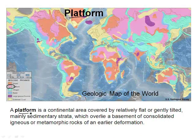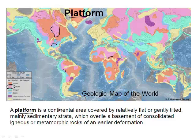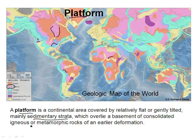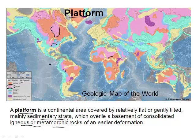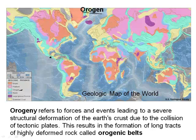Now let's look at the platform — notice that's a different color. The purple ones you can see in Africa, a little bit in South America, around Hudson Bay, and up in the upper Midwest. A platform is a continental area covered by relatively flat, gently dipping sedimentary strata — sedimentary rocks which overlie a basement of consolidated igneous or metamorphic rocks. Realistically, they're probably on top of the shield formation.